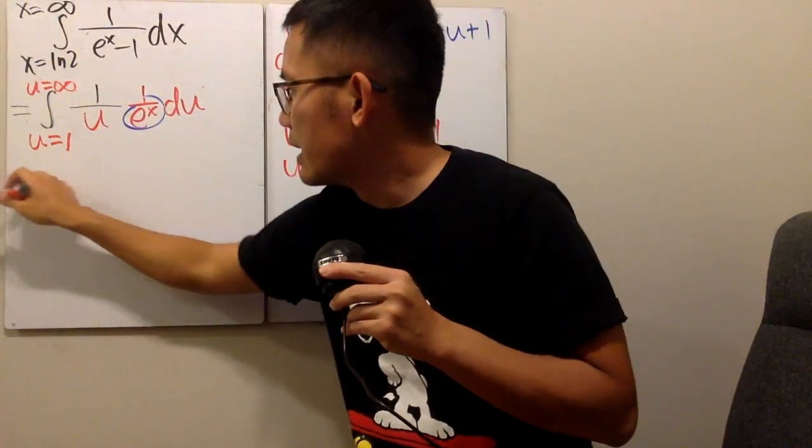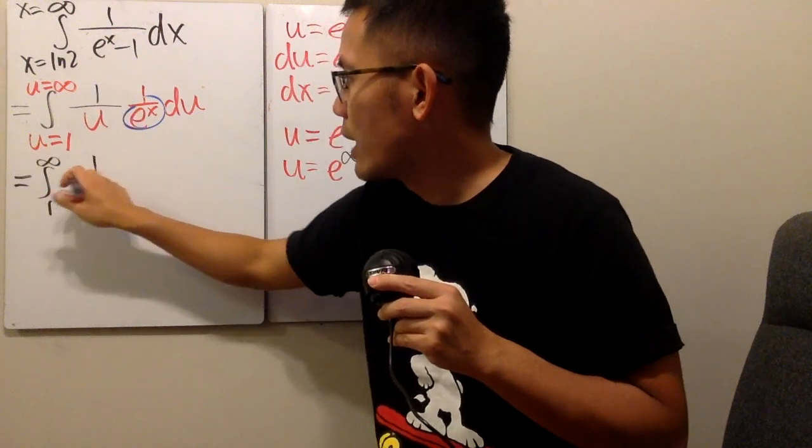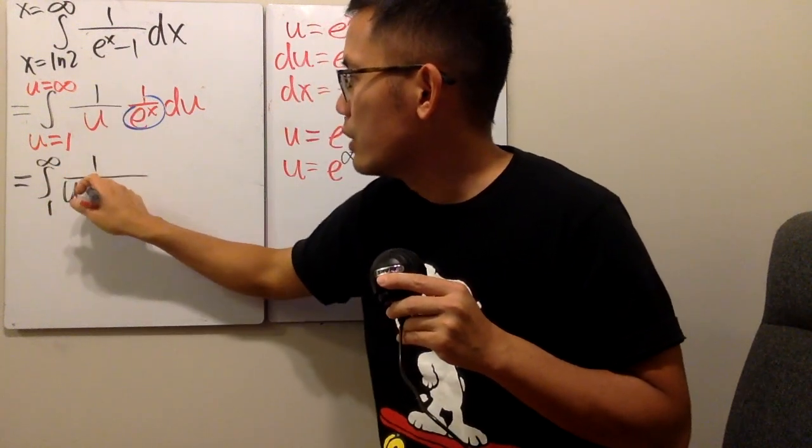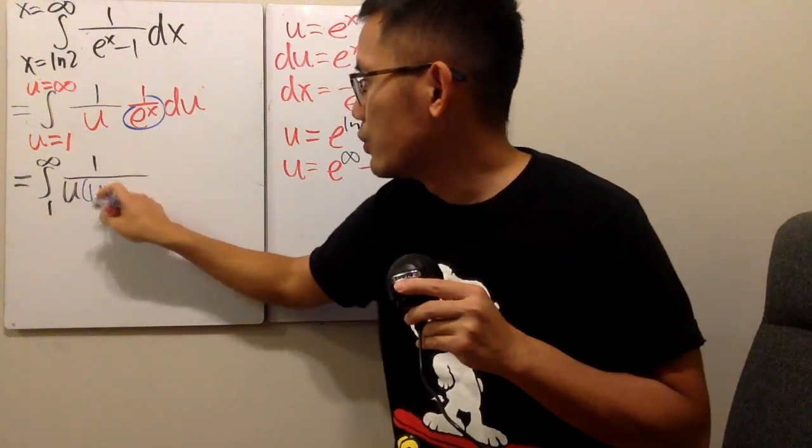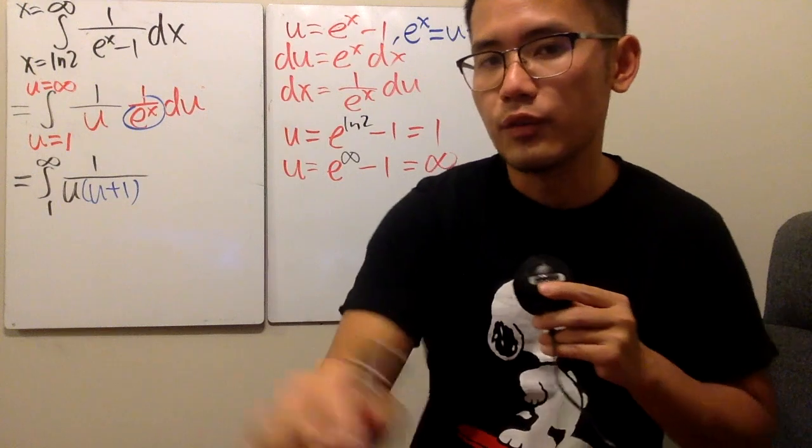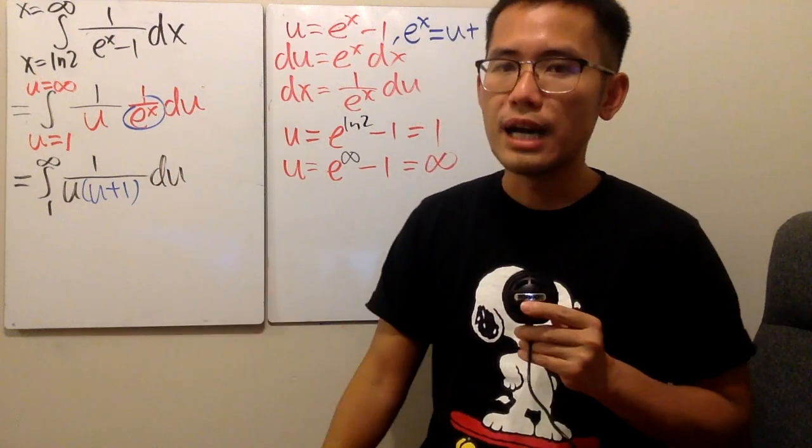So, you will see that, here we will have the integral going from one to infinity. And this is just one over u times, this right here is our u plus one. And of course, we still have the du right here. Now, how can we work this out?